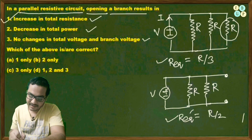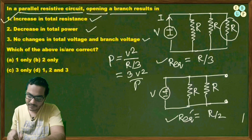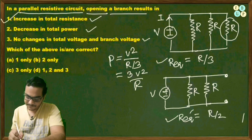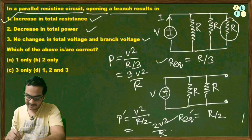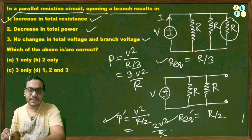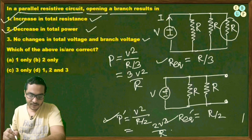Checking power: initially P = V²/(R/3) = 3V²/R. After the branch opens, P' = V²/(R/2) = 2V²/R. Power decreases when a branch opens. So statement 2 — decrease in total power — is also true.